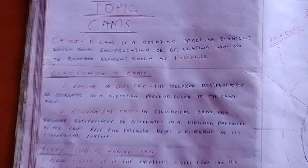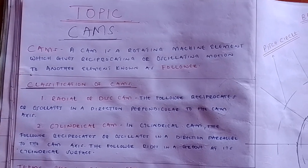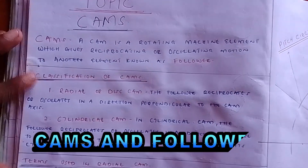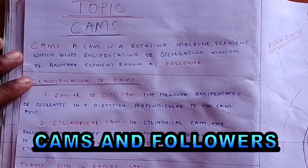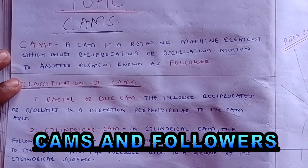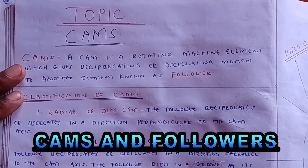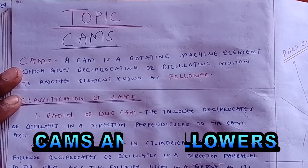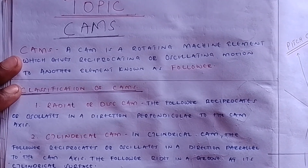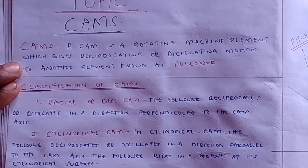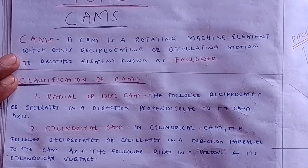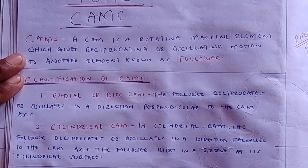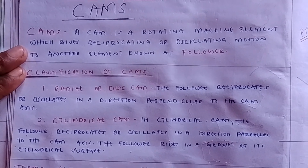Now I want us to quickly look at this topic about cams. It is a very important topic in engineering drawing and design for diploma students, especially in module two. What is a cam? A cam is a rotating machine element which gives reciprocating or oscillating motion to another element known as a follower.